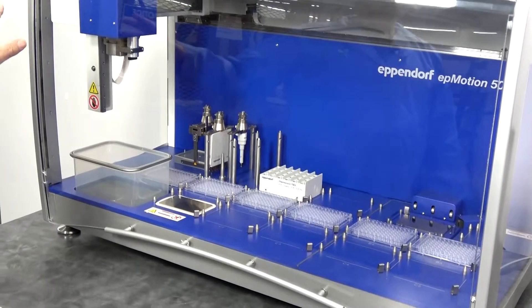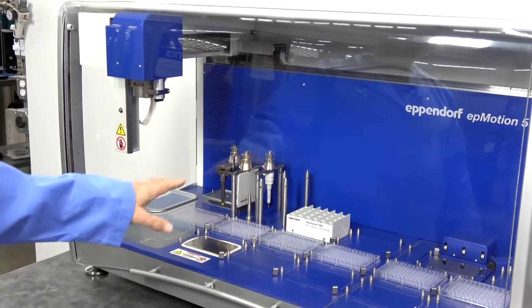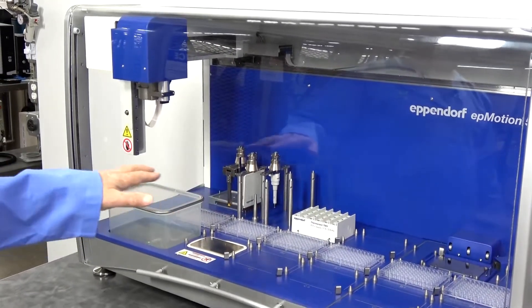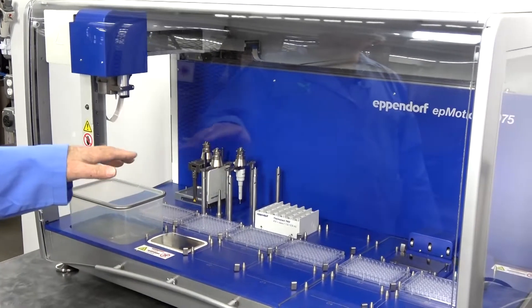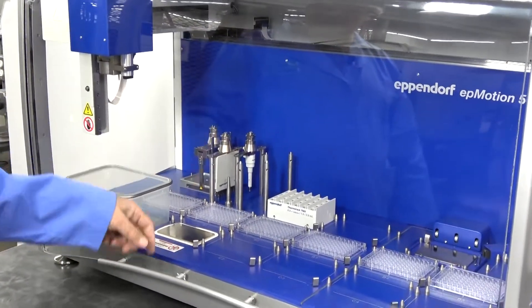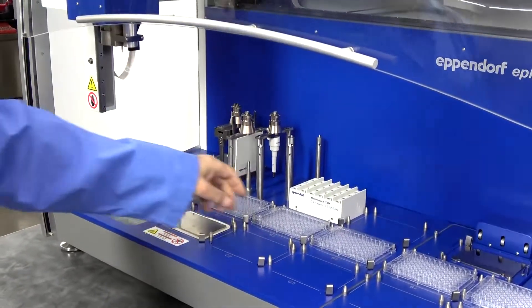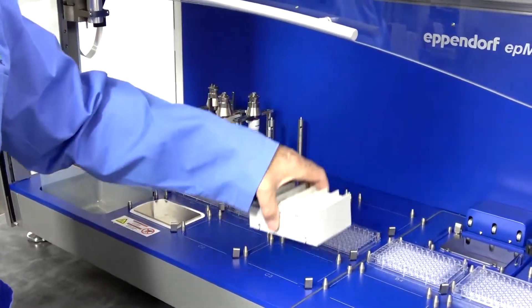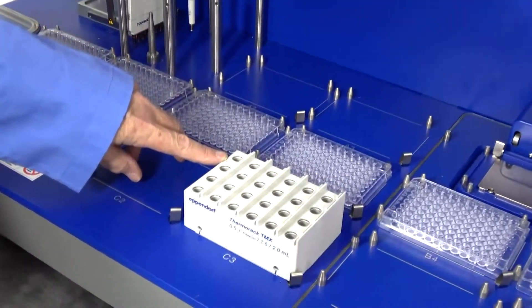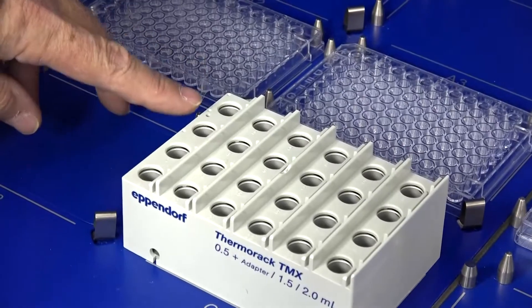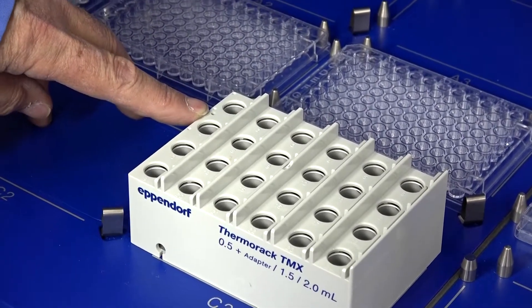One of the things that is somewhat unique about this liquid handler is it has an optical sensor, so that it does check the height of your plates, that it checks the type of equipment that you've got loaded, and that it matches the program. So it'll use a code on the plate or on the device that tells it what it is and that it's correct.